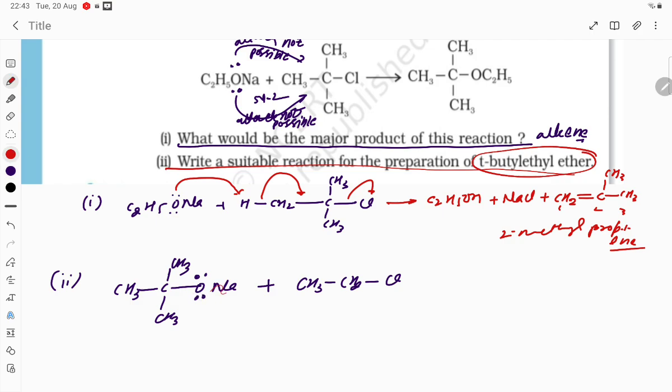Now this lone pair electron can easily attack on this position. As a result, this bond is going to split out. So the product you are going to get is CH3-C. Because SN2 is possible here. Why is it possible? Because the alkyl halide should be primary.